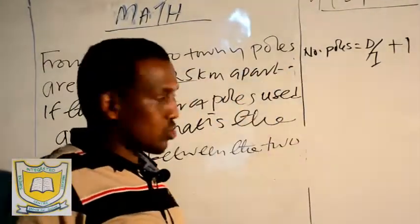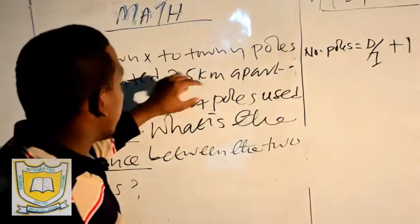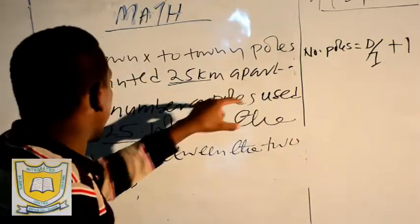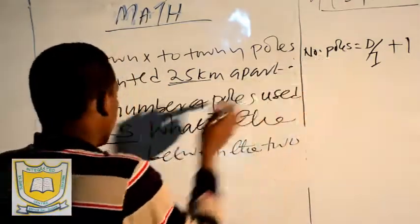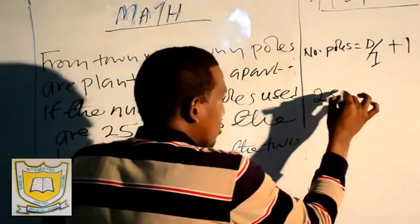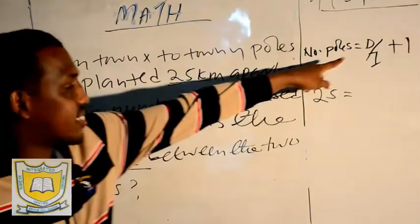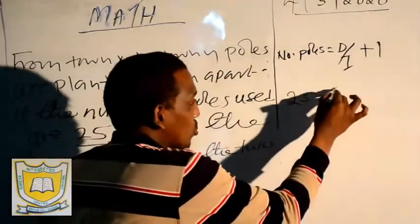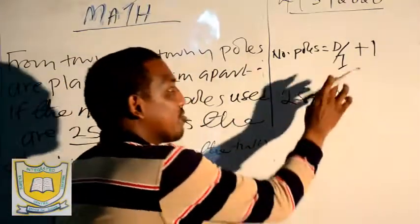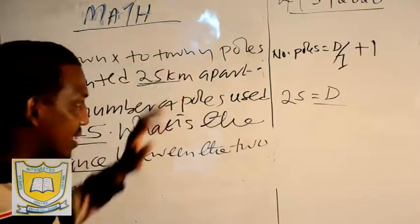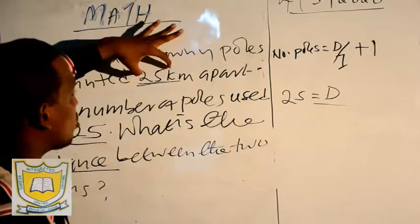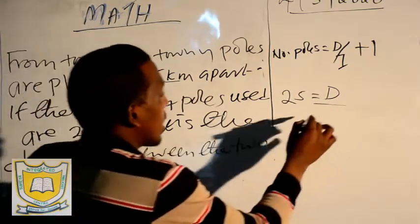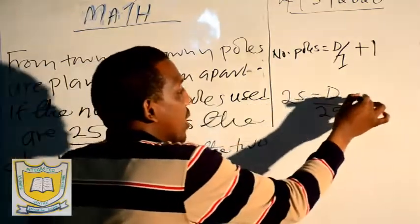Now we have the number of balls. They say 25 meters apart — this is the interval. The number of balls used are 25. So, number of balls is 25, which equals distance over interval, and the interval is 25 meters. So we write: 25 equals D over 25, plus 1.